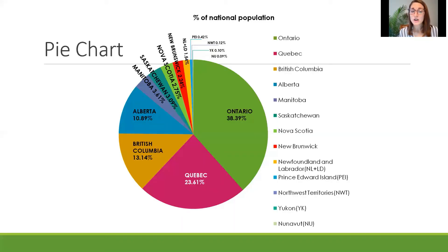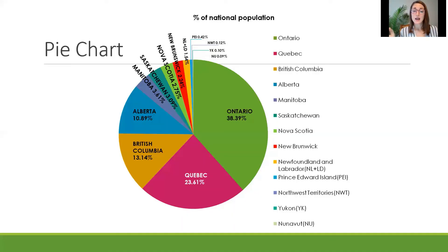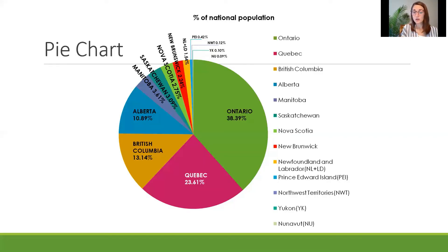When looking at a pie chart, it's usually a bit easier to see the sizes of sections and how they compare. For example, right away I noticed that Ontario is the biggest portion of the national population. Ontario is just over one-third of the population — I know that because one-third would be 33.3% and we can see it is 38.39%. If we were to cut this circle into thirds, Ontario would be about a third of the circle. Once you know how to read a pie chart, you can use the information to answer questions about comparisons, general percentages, and proportional space.